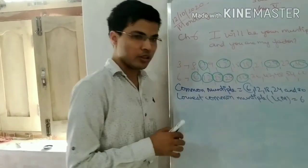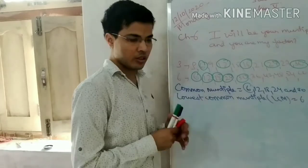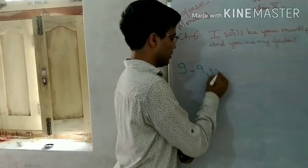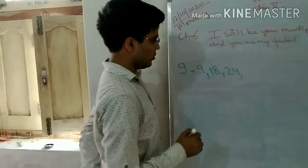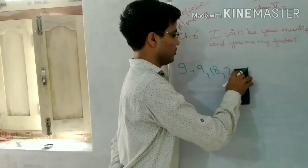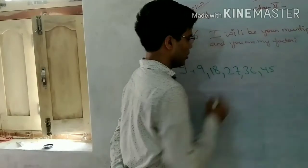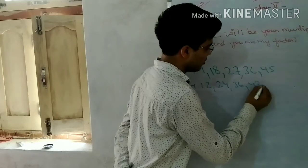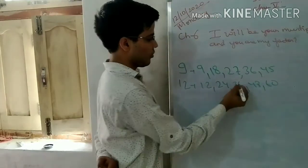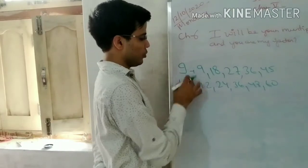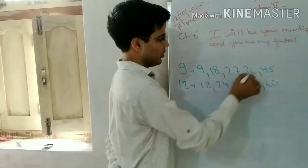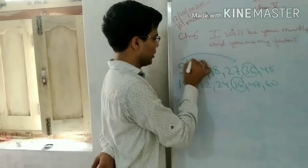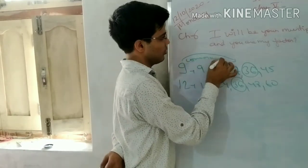If we have three numbers, we will check with all three numbers. Now let's find the multiples of 9: 9, 18, 27, 36, and 45. And multiples of 12: 12, 24, 36, 48, and 60. As you can see, in both 9 and 12, the common multiple is 36. So the LCM of 9 and 12 is 36.